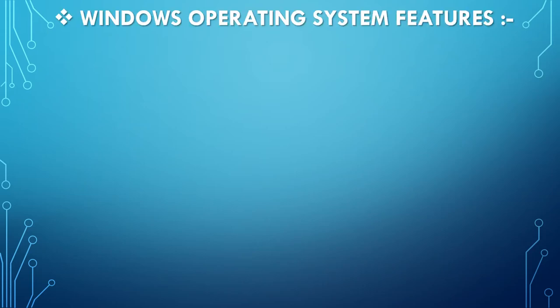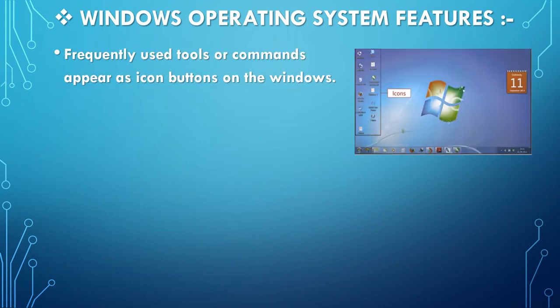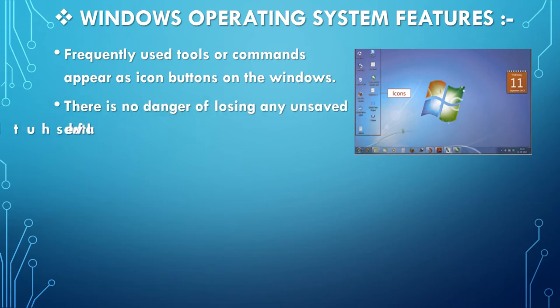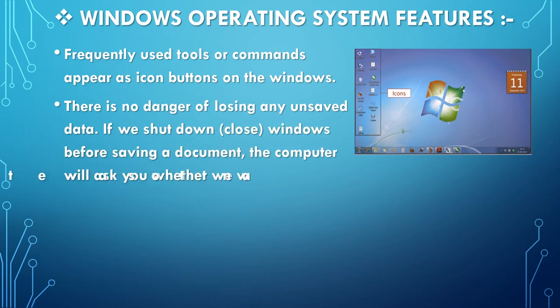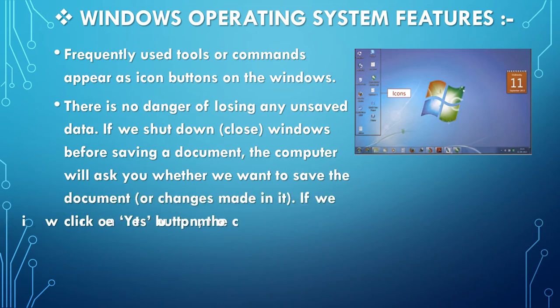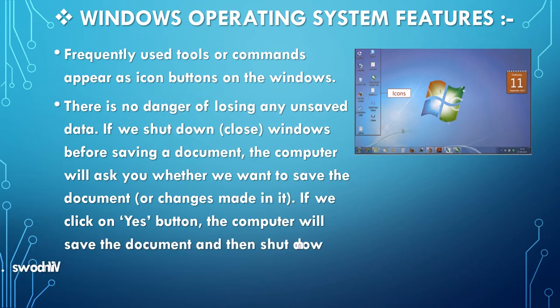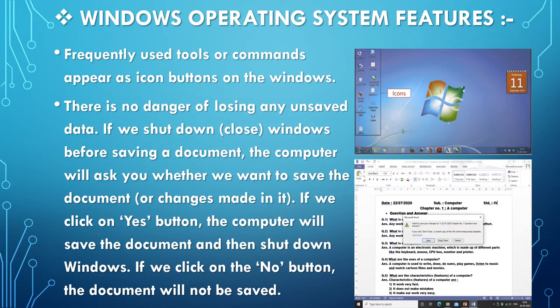Frequently used tools or commands appear as icon buttons on Windows. There is no danger of losing any unsaved data. If we shut down Windows before saving a document, the computer will ask whether we want to save. If we click Yes, the computer will save the document and then shut down. If we click No, the document will not be saved. If we click Save, the document is saved; if we click Don't Save, the document will not be saved.